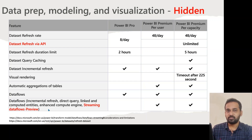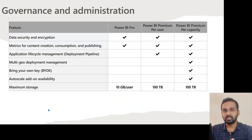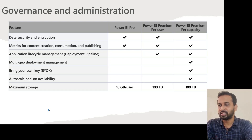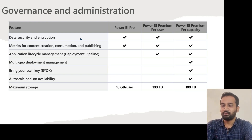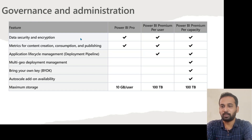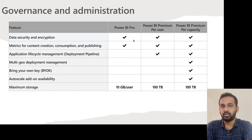There are a lot of differences between Pro and Premium. Moving to the last section: governance and administration. Data security and encryption is available for all users — Pro, Premium Per User, and Premium Per Capacity. Metrics for content creation, consumption, and publishing are also available for all users. Application lifecycle management, which includes deployment pipelines, is not available for Pro — it is available only for PPU and Premium Per Capacity. Multi-geo deployment management is only available for Power BI Premium Per Capacity.